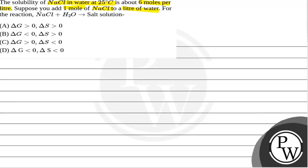Option A: delta G greater than 0, delta S greater than 0. Option B: delta G less than 0, delta S greater than 0. Option C: delta G greater than 0, delta S less than 0. Option D: delta G less than 0, delta S less than 0.